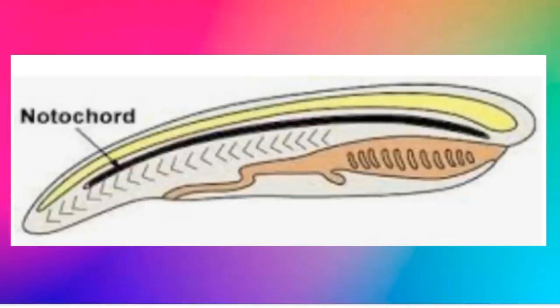The notochord is present during the embryonic stage. In primitive organisms, it persists throughout life. In other organisms, it is replaced by the vertebral column — the backbone. The notochord has a rod-like shape and develops during the embryonic stage.